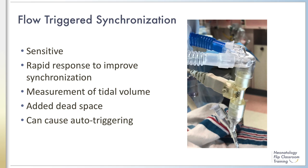Flow-triggered synchronization is most commonly used. It is sensitive enough to be activated by preterm infants, allows rapid response, and allows measurement of tidal volume. The flow sensor is typically between the endotracheal tube and ventilator tubing; tidal volume measurement may not be accurate without a software algorithm accounting for the additional dead space. In the presence of an air leak, the flow sensor is susceptible to auto-triggering, as is water in the expiratory limb. Newer neonatal-specific ventilators have technology to compensate for ETT leak and eliminate leak-related auto-triggering.